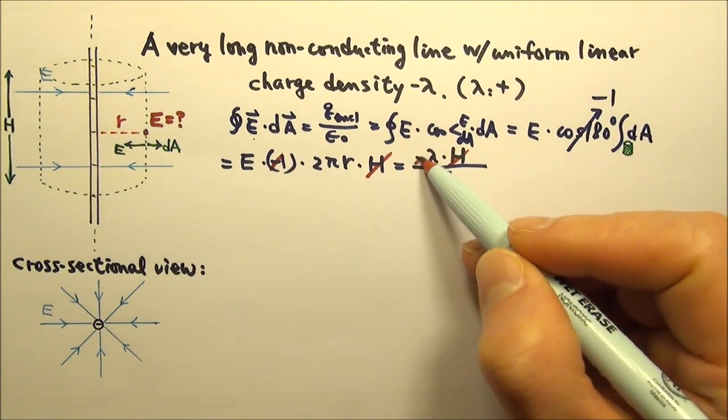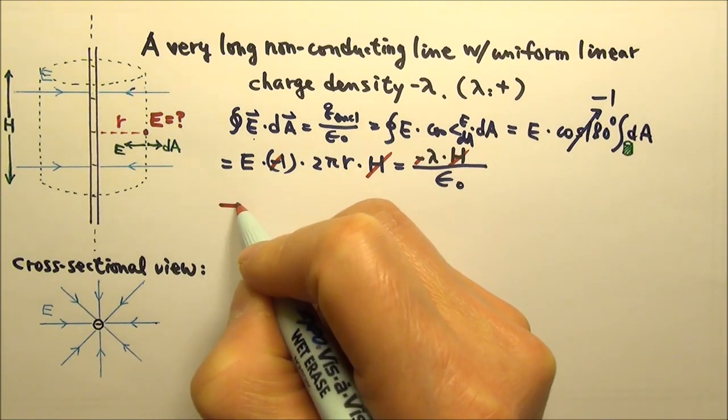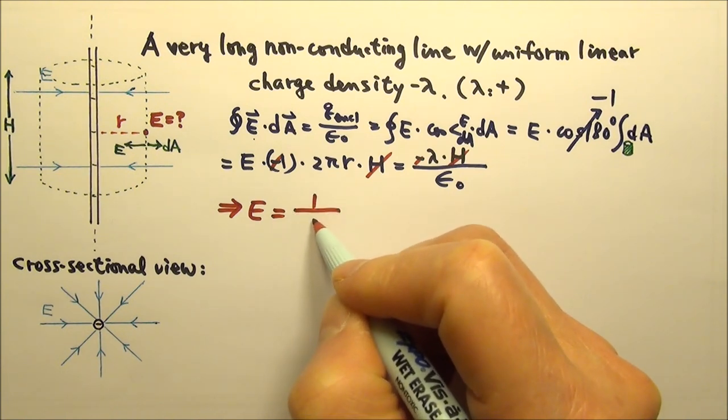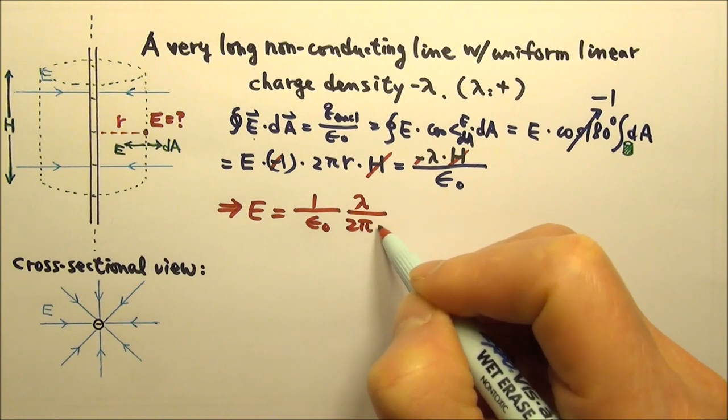We can also cancel the negative sign, and then divide by 2πr on both sides. We get the electric field to be λ/(2πrε₀).